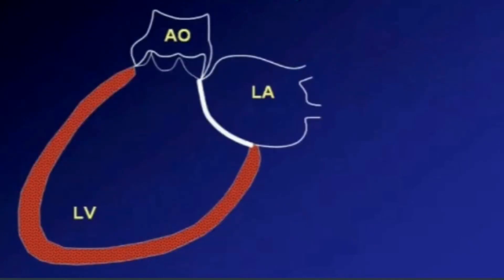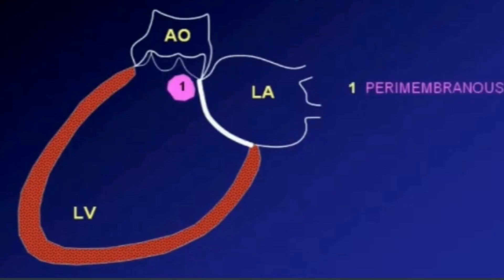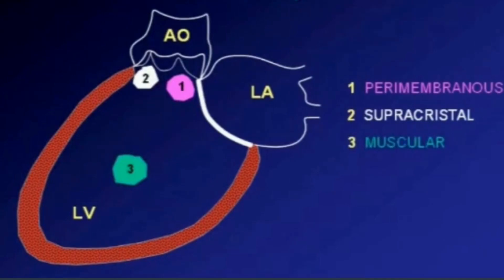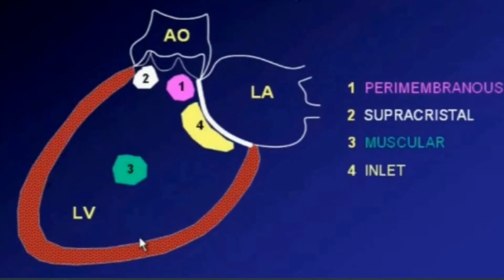Flipping the heart to look from the left ventricular side changes the perspective importantly. The perimembranous defect, which was right underneath the tricuspid valve on the right ventricular side, is now a subaortic defect when viewed from the left ventricular side. The supracrystal defect, which was subpulmonary, is also subaortic from the LV side but much more anterior. Muscular defects are found anywhere in the muscular trabecular septum, and inlet defects are posterior near the AV valves, in and around the mitral valve.